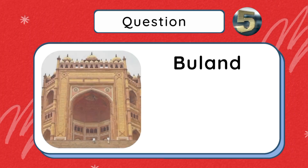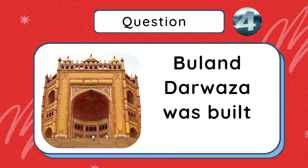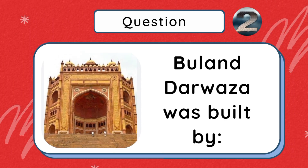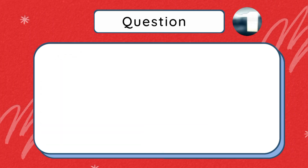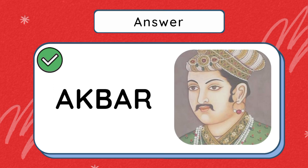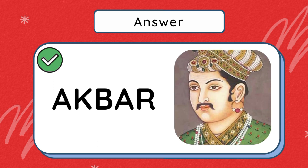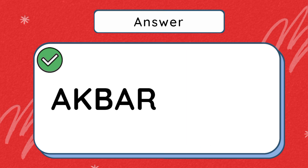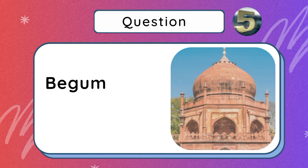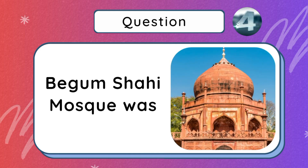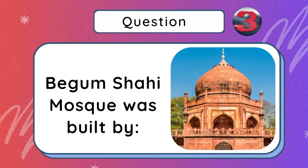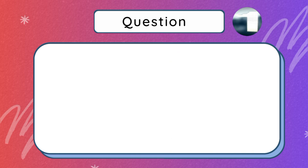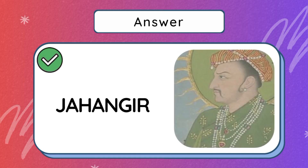Bolan Darwaja was built by Akbar. Begam Shahi Mosque was built by Shah Jahan.